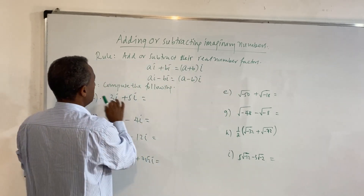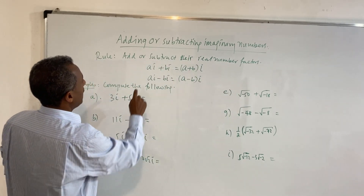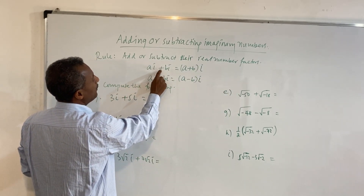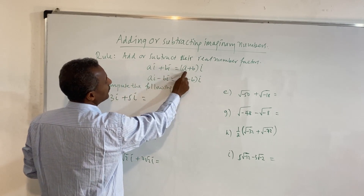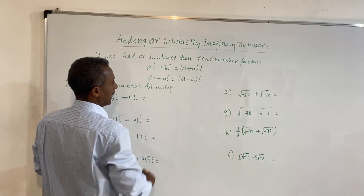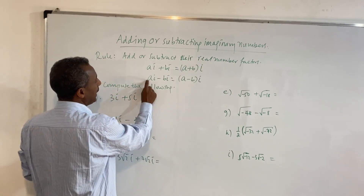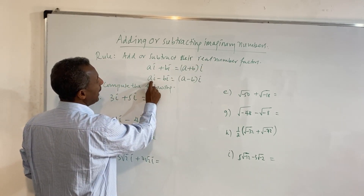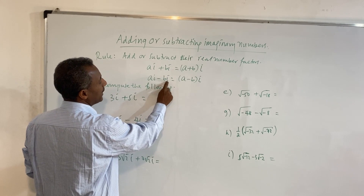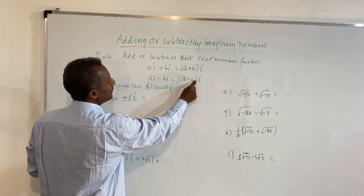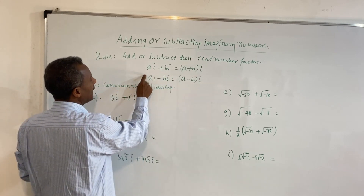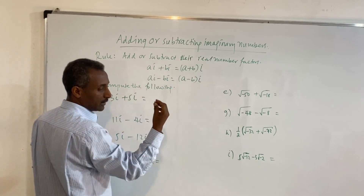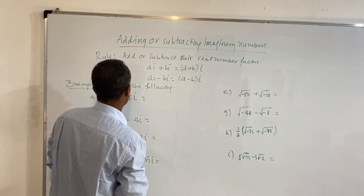A plus Bi plus A plus Bi — adding imaginary numbers: Ai minus Bi equals A minus B, the whole times i. A minus B is the coefficient.